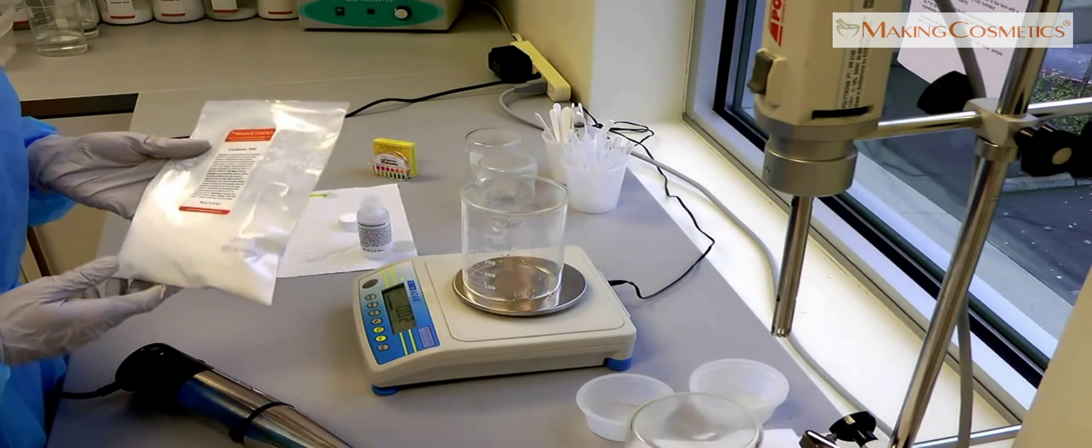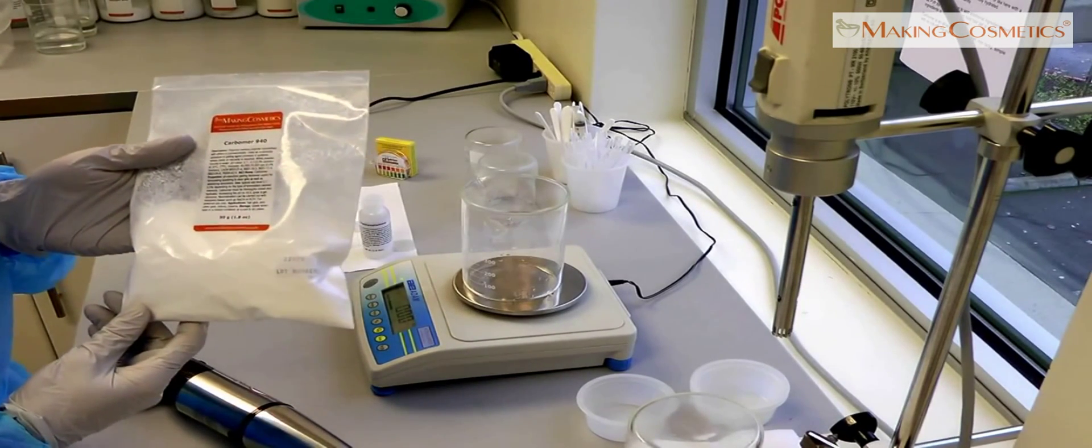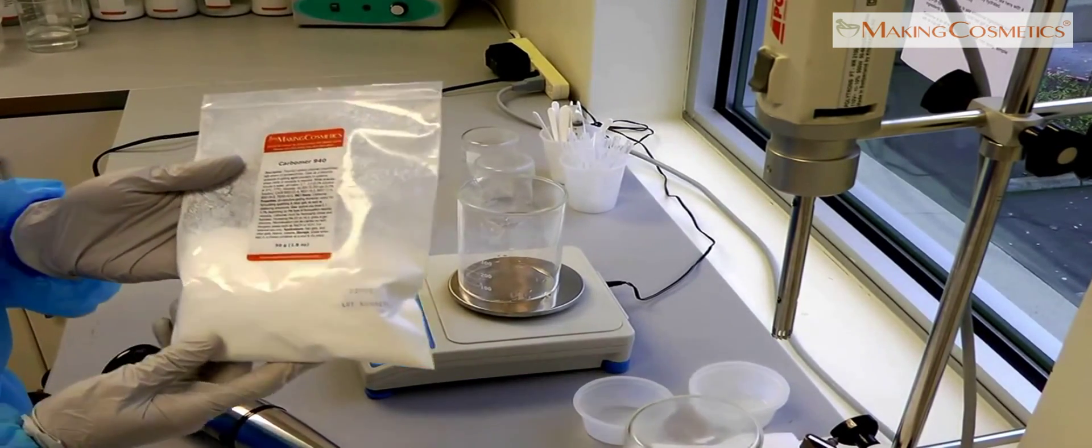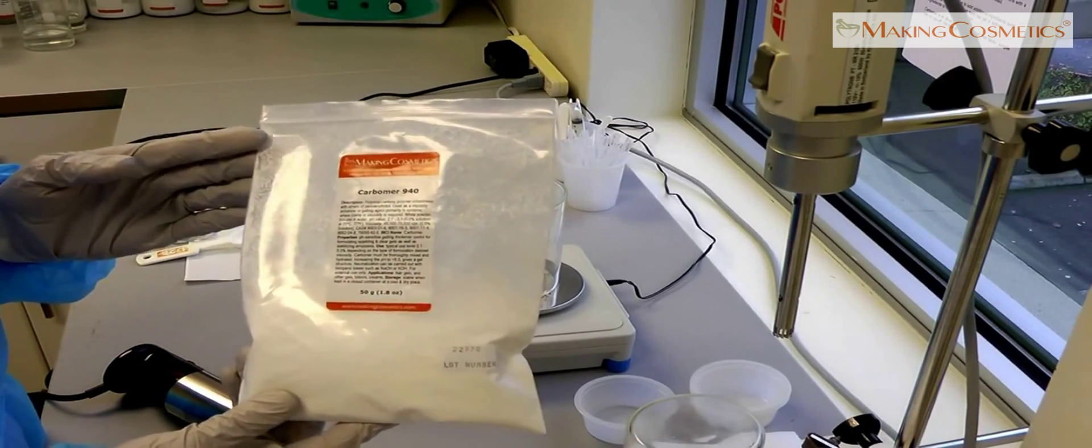Making a hair gel with carbomer. Carbomer is a polymer that will swell when in contact with water. It's necessary to thicken the water for a lotion or making a gel base for hair styling.